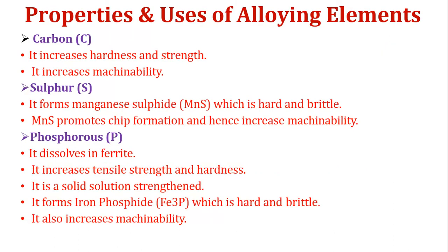Properties and uses of alloying elements. First element — carbon: it increases hardness, strength, and machinability. Second element — sulfur: it forms magnesium sulfide which is hard and brittle. Magnesium sulfide promotes chip formation and hence increases machinability, which is why sulfur is generally preferred in mild steel for good machinability. Third element — phosphorus: it dissolves in ferrites, increases tensile strength and hardness, is a solid solution strengthener, forms iron phosphide Fe3P which is hard and brittle, and also increases machinability.